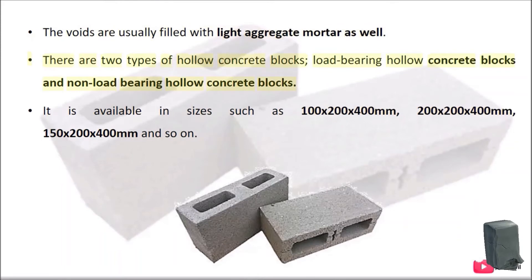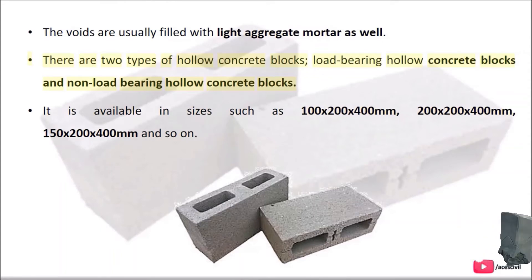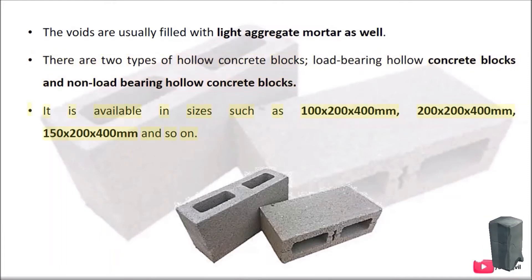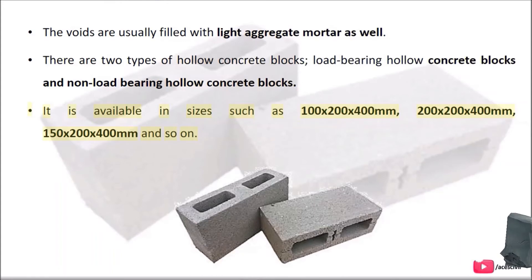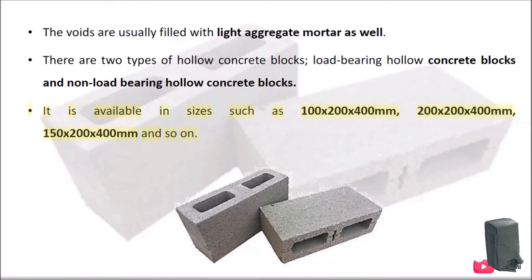There are two types of hollow concrete blocks: load-bearing hollow concrete blocks and non-load-bearing hollow concrete blocks. They are available in sizes such as 100x200x400mm, 200x200x400mm, 150x200x400mm, and so on.